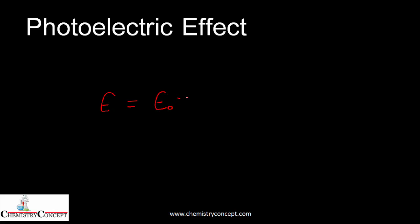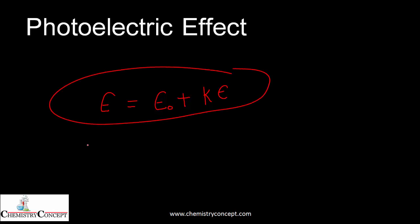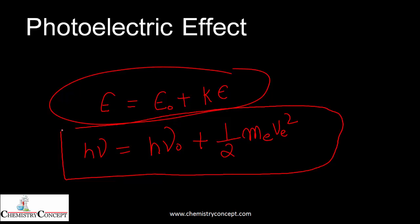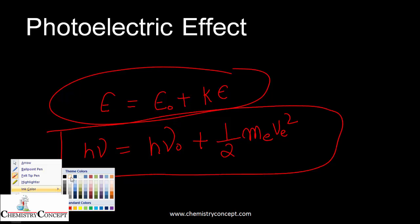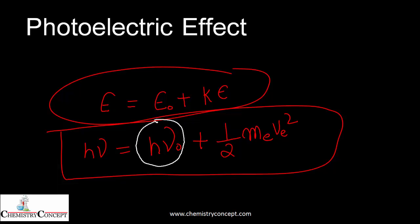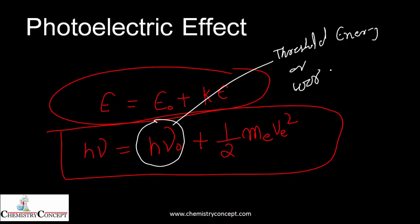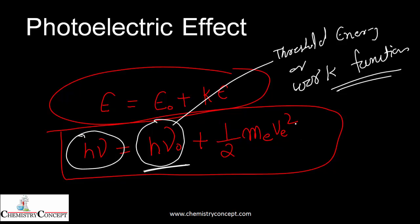The equation becomes: energy given equals threshold energy plus kinetic energy of photoelectrons, that is hν = hν₀ + ½mv². This equation was given by Einstein and is the base equation for the photoelectric effect. The minimum energy hν₀ is called threshold energy, also known as the work function.